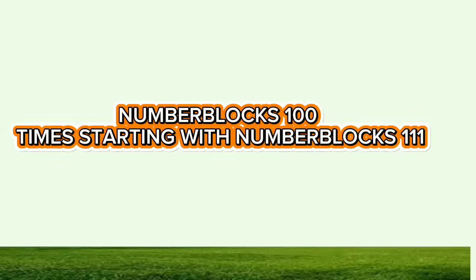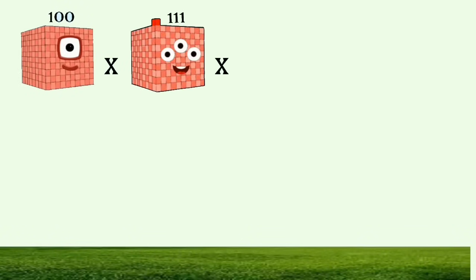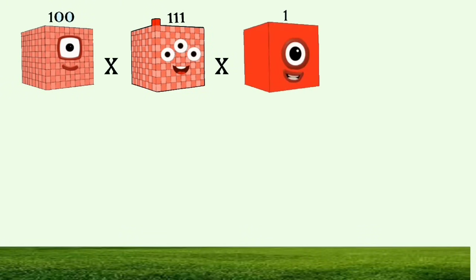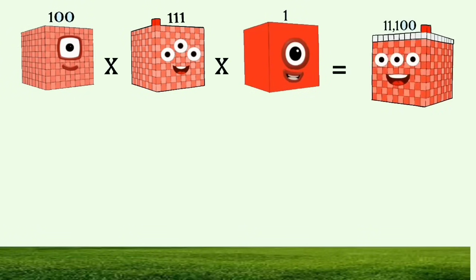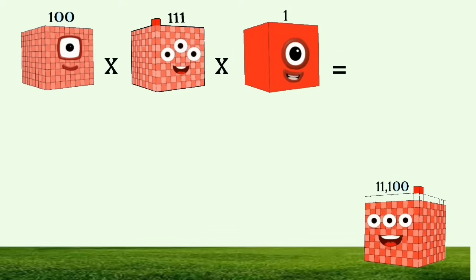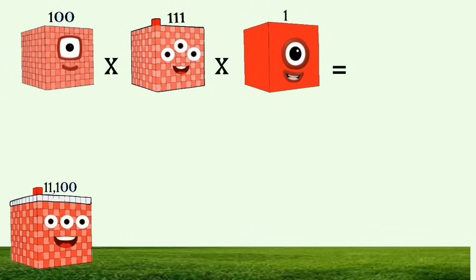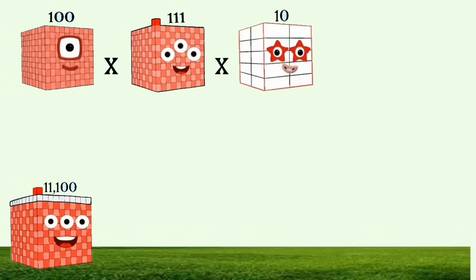Number blocks: 100 times, starting with number 111. 100 times 111. 100 times 11,000. 100 times 11,000,000. 100 times 11,000,000,000.